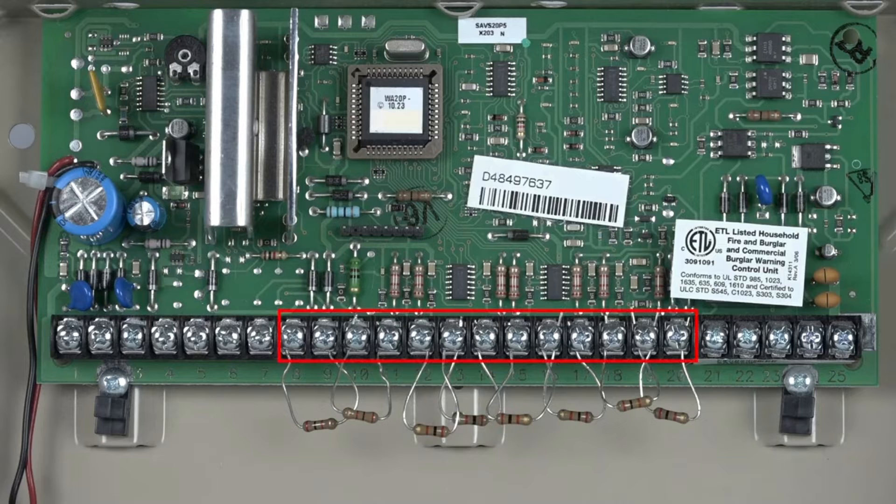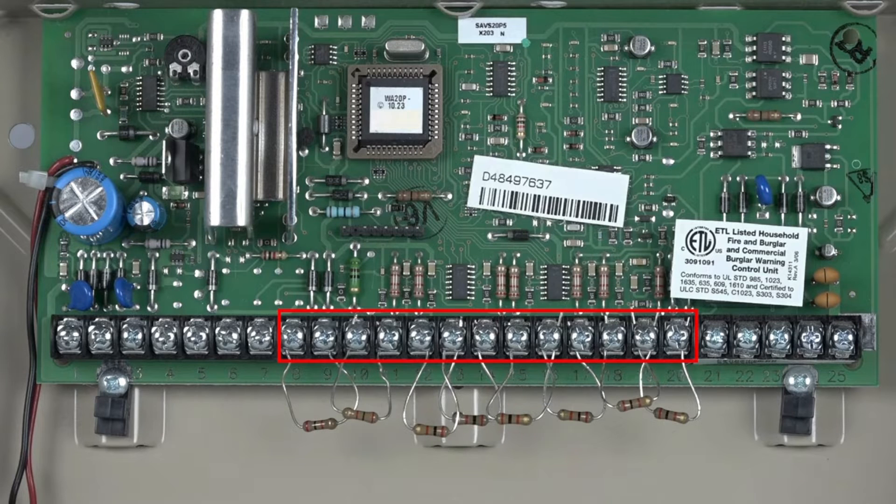Terminals 8 through 20 are your zone terminals. It is recommended to strap out these zones with 2K resistors if you are not using the zones since these have program values by default.